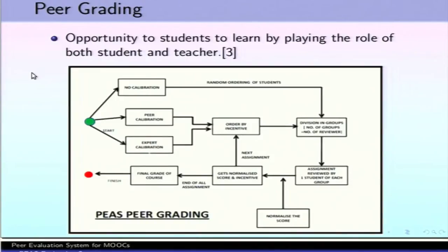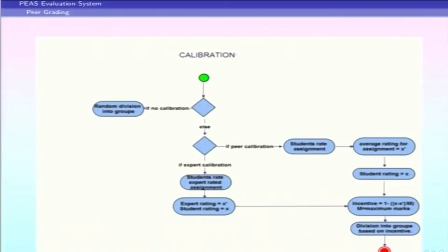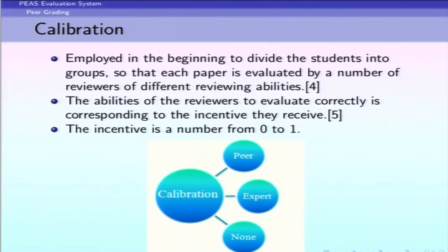Initially when starting the system there is a calibration phase. Calibration is done so that when there is no user profile available and we don't have any statistics on a student's ability as a grader, we can calibrate their skills accordingly and determine how well they can grade. The calibration models we support are peer, expert, and none.